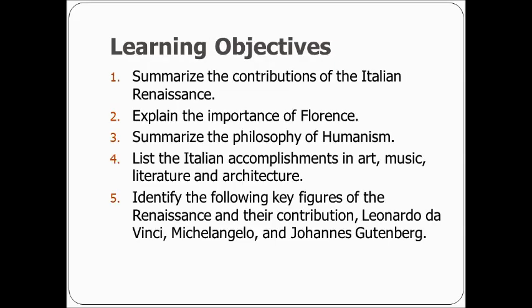The learning objectives for this: first, summarize the contributions of the Italian Renaissance. Second, explain the importance of Florence. Third, summarize the philosophy of humanism. Fourth, list the Italian accomplishments in art, music, literature, and architecture. Then identify some of the following key figures: Leonardo da Vinci, Michelangelo, and Johann Gutenberg.